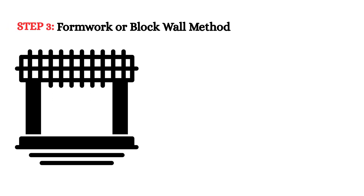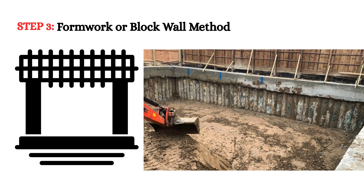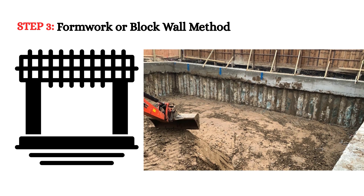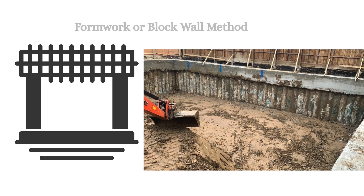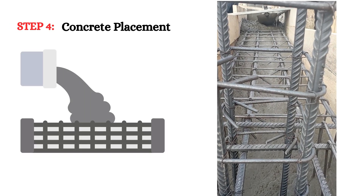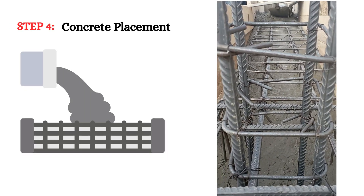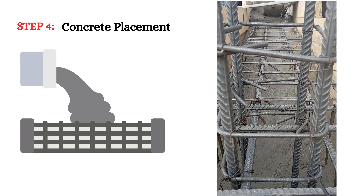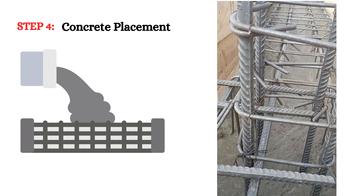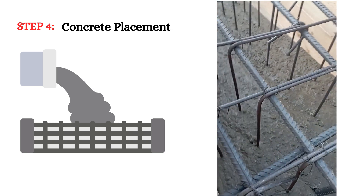Step 3 — Formwork or block wall method: Capping beams may be formed using traditional plywood and steel shuttering, or more economically, by building a block wall to the exact dimensions of the beam and backfilling it to shape the form. Step 4 — Concrete placement: Concrete is either poured into the formwork or sprayed in layers using shotcrete. In some cases, especially when forming part of a contiguous piled wall, the concrete may be sprayed from top to bottom. Some contractors intentionally leave part of the front face of the capping beam open so that the shotcrete wall can later be sprayed continuously, avoiding construction joints.